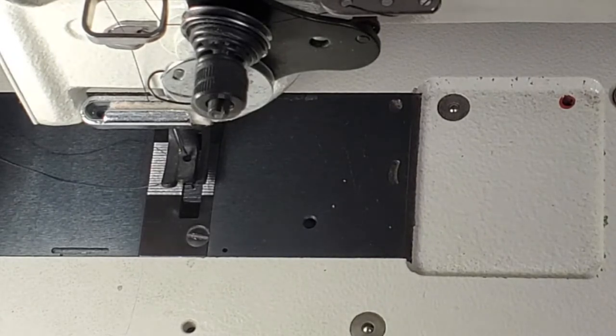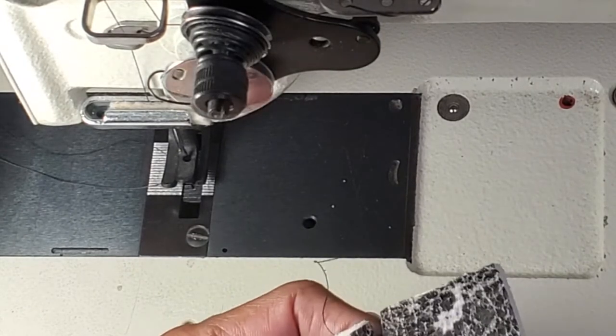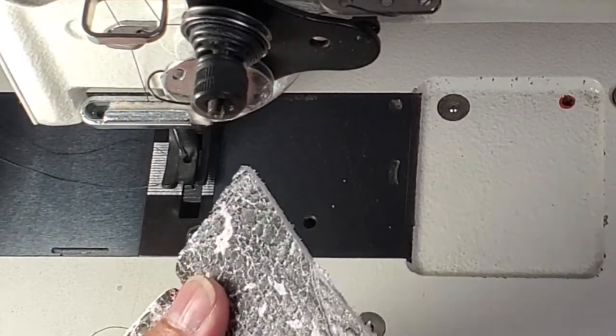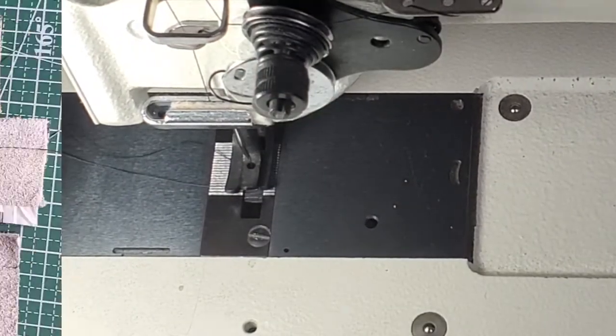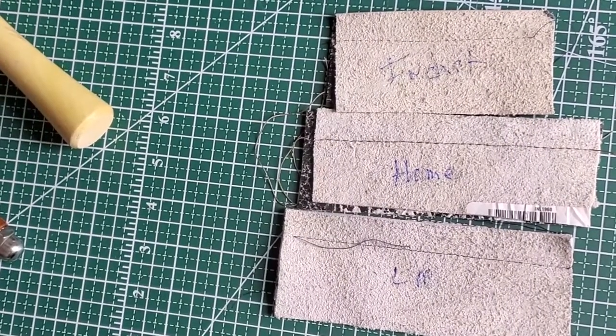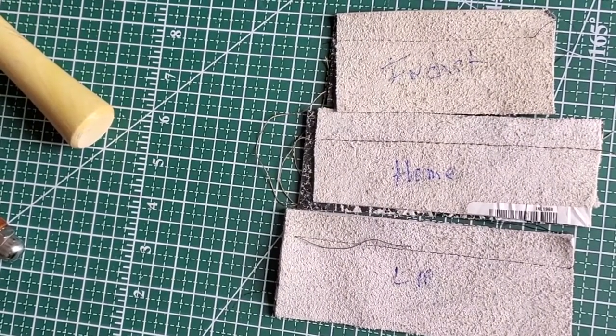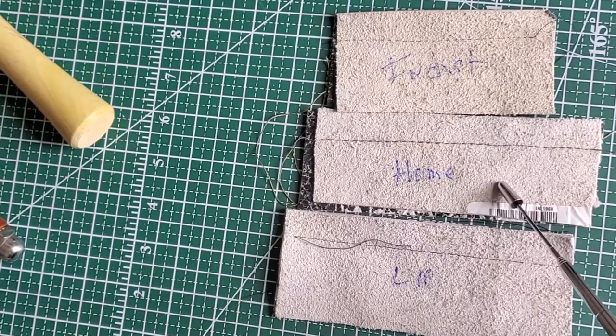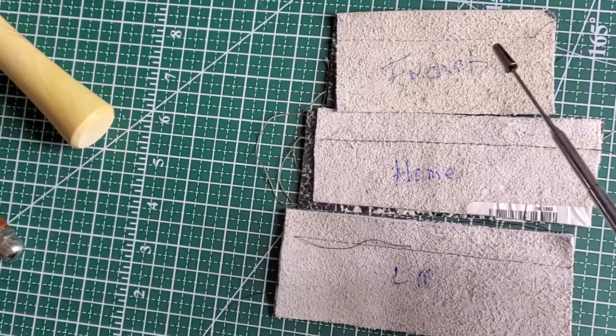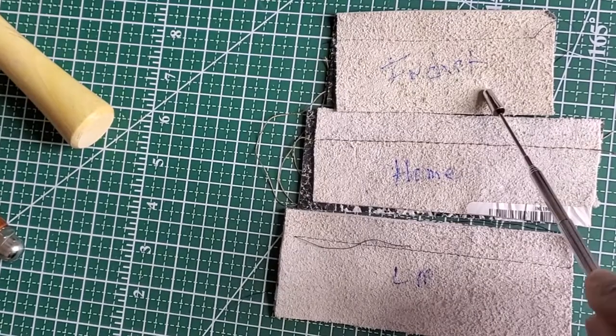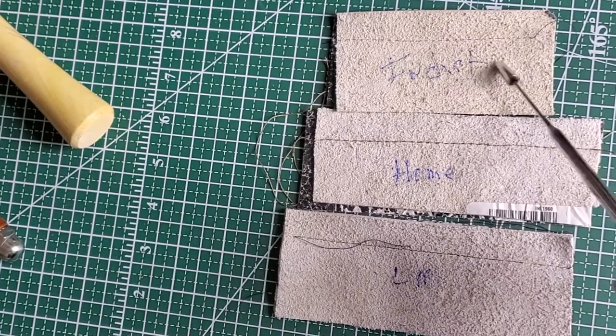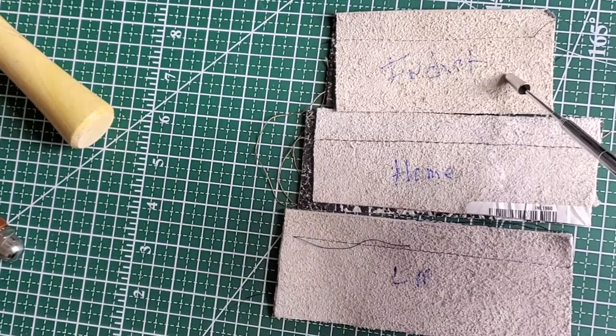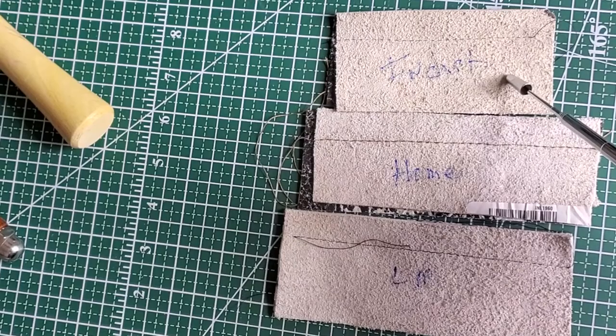So what we're going to do now, we're going to get the seams open, and to do that we're going to pound them. So what I did here, I labeled each of the ones that we sewed. LM, this is the leather machine, Home, that's the domestic machine, and Industrial. I'm going to top stitch them the same way with the same machines.